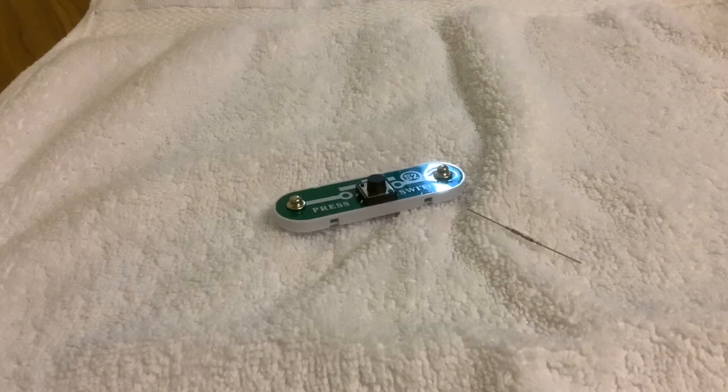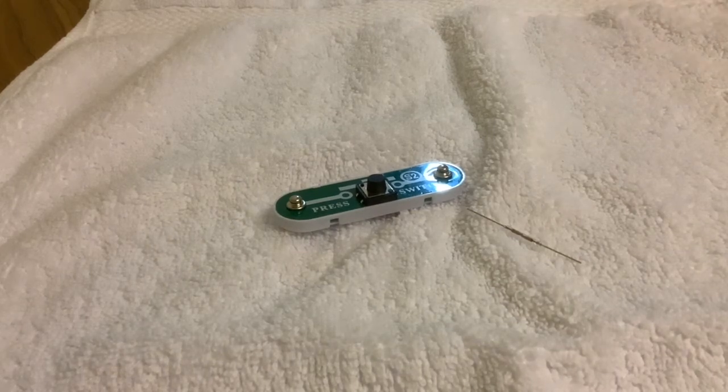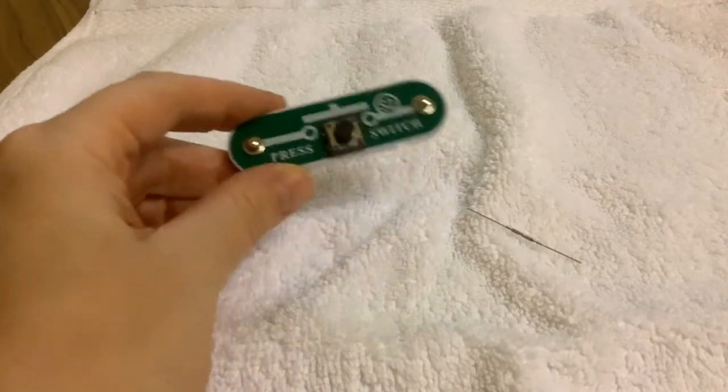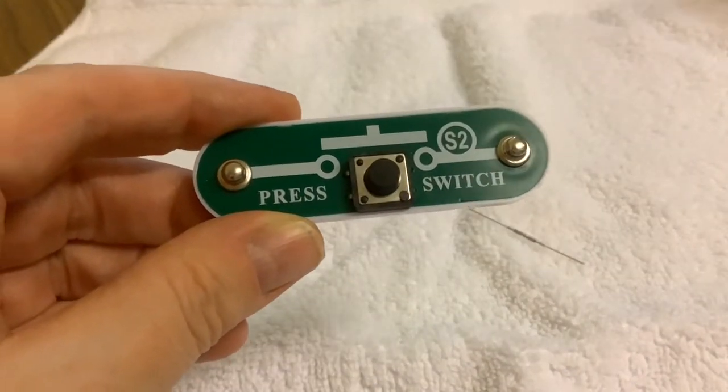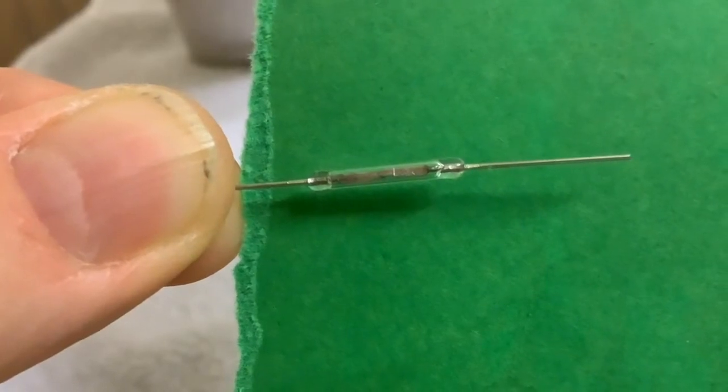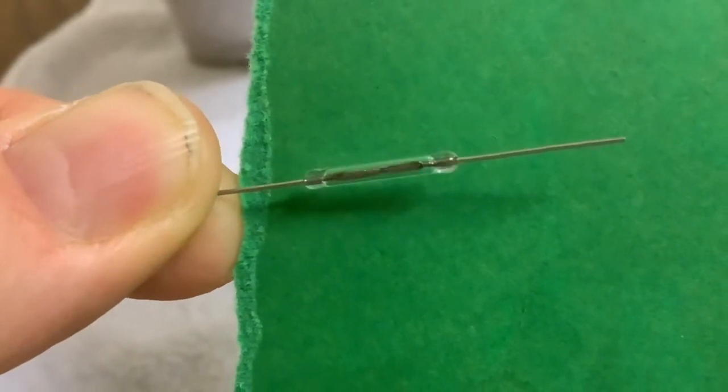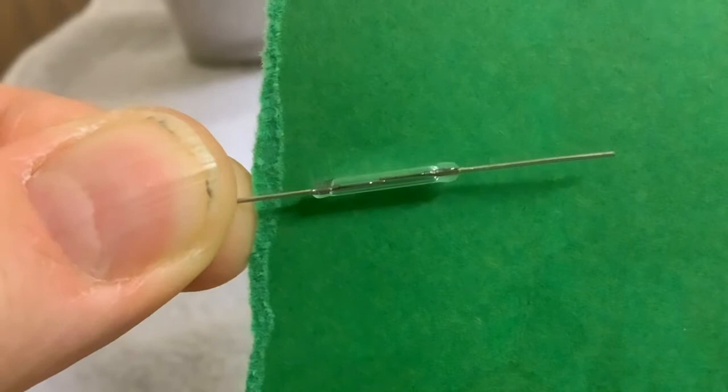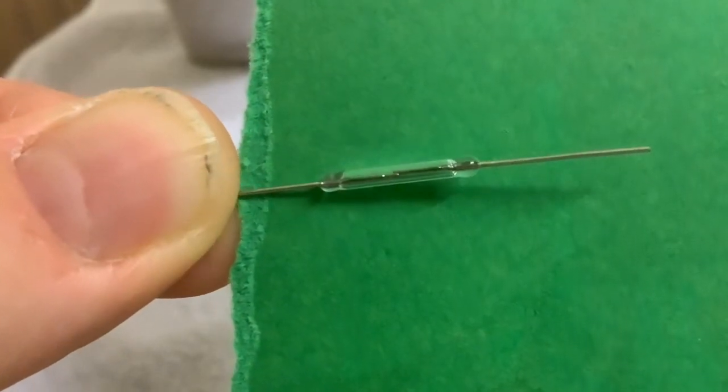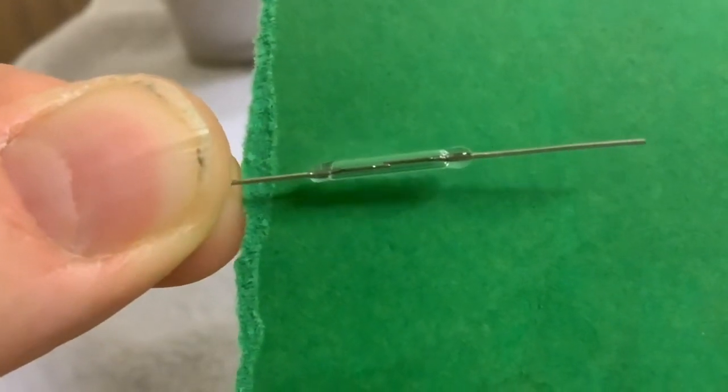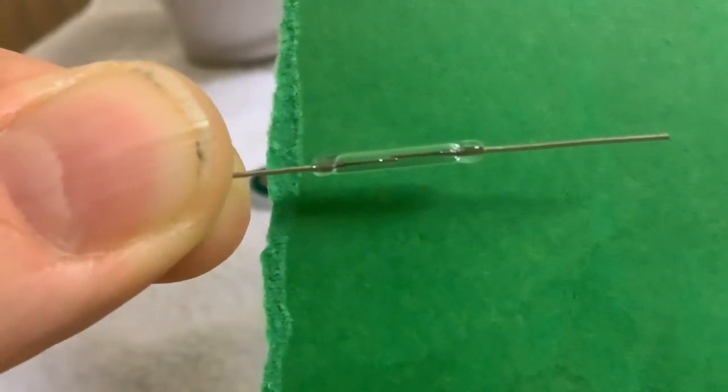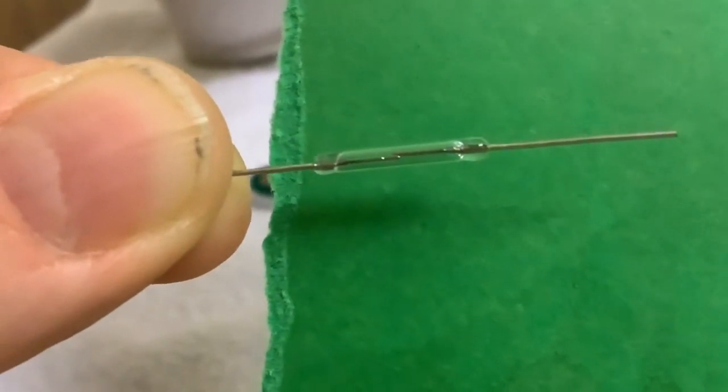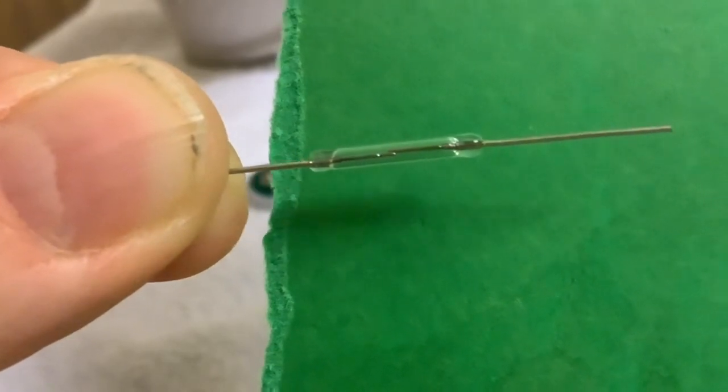Hi folks, in today's video Paul is going to replace this push button switch with this reed switch. So Paul, can you first say what a reed switch is? It's just a simple switch like the one we're going to replace, but instead of it being operated by your finger, it's operated by bringing a magnet close to it.